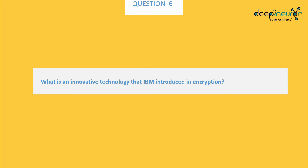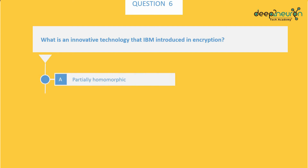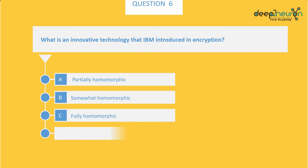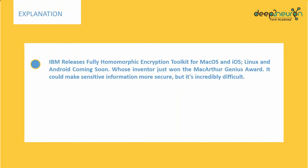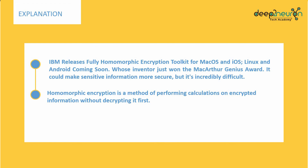Question number 6: What is an innovative technology that IBM introduced in encryption? Option A: Partially homomorphic encryption. Option B: Somewhat homomorphic encryption. Option C: Fully homomorphic encryption. Option D: All of the above. The right answer is Option C, fully homomorphic encryption. IBM released a fully homomorphic encryption toolkit for macOS, iOS, Linux, and Android. It could make sensitive information more secure. Homomorphic encryption is the method of performing calculations on encrypted information without decrypting it first.